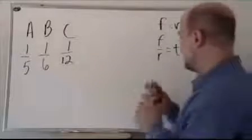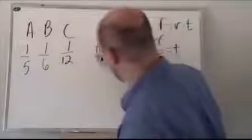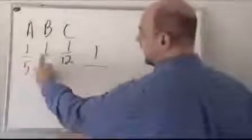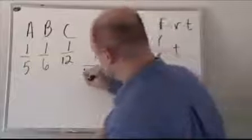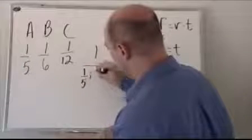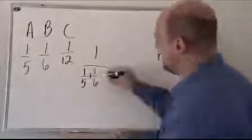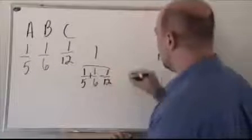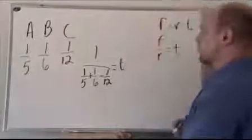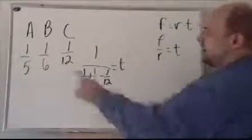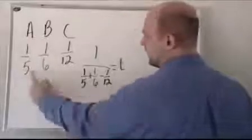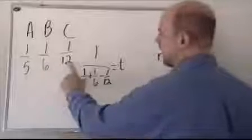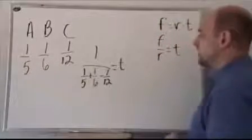So then we set up our formula. We want to get the whole tank full, so one. We want it 100% full, divided by the rate. Well, the rate is A and B are working to fill it, so it's one-fifth plus one-sixth. But C is working to empty it, so we subtract what C is doing, minus one-twelfth. And that's going to give us the time in hours to fill this tank. Because A and B working together, since their fractions represent larger numbers per hour, they're filling that tank faster than C can empty it.